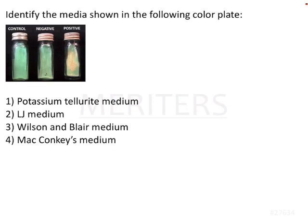The question here is: identify the media shown in the following color plate. Here you can see there is a bottle in which a greenish color substance is there. If you see a negative result, there won't be any change in the color. But if it is positive, then you will be able to see certain colonies.